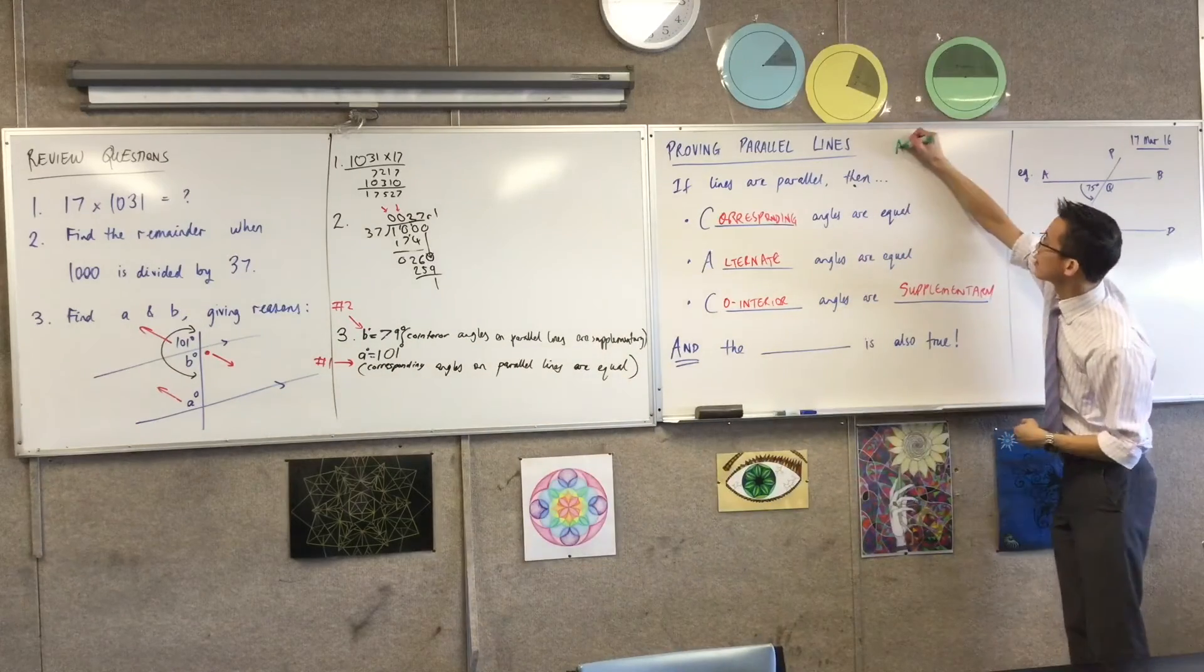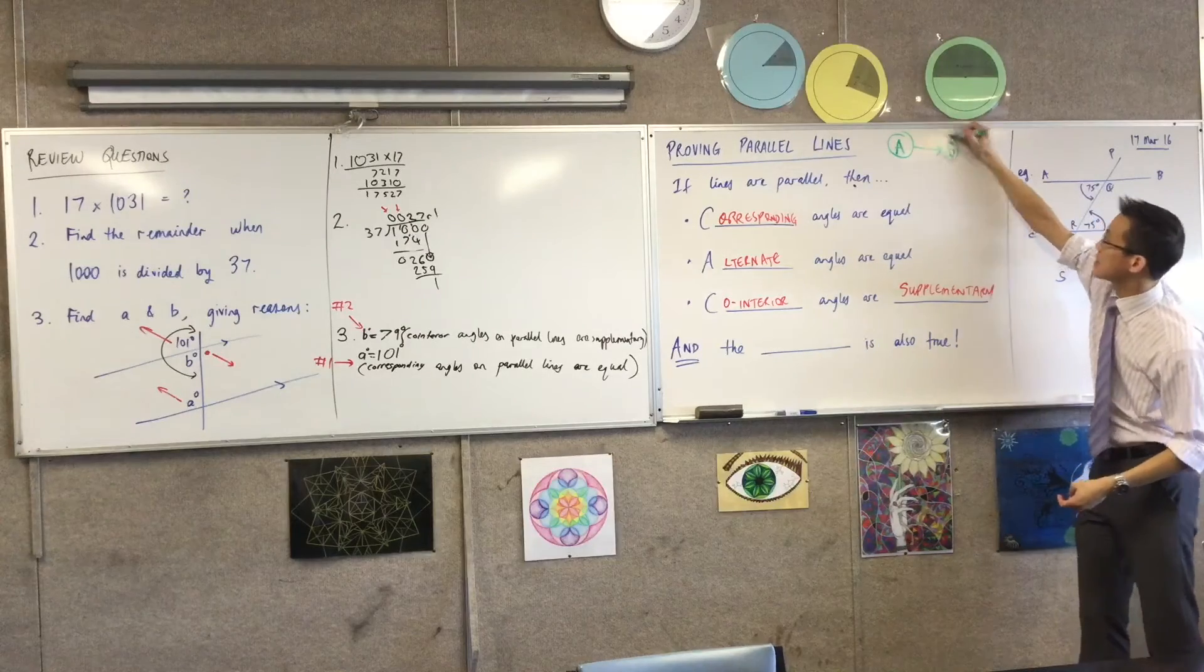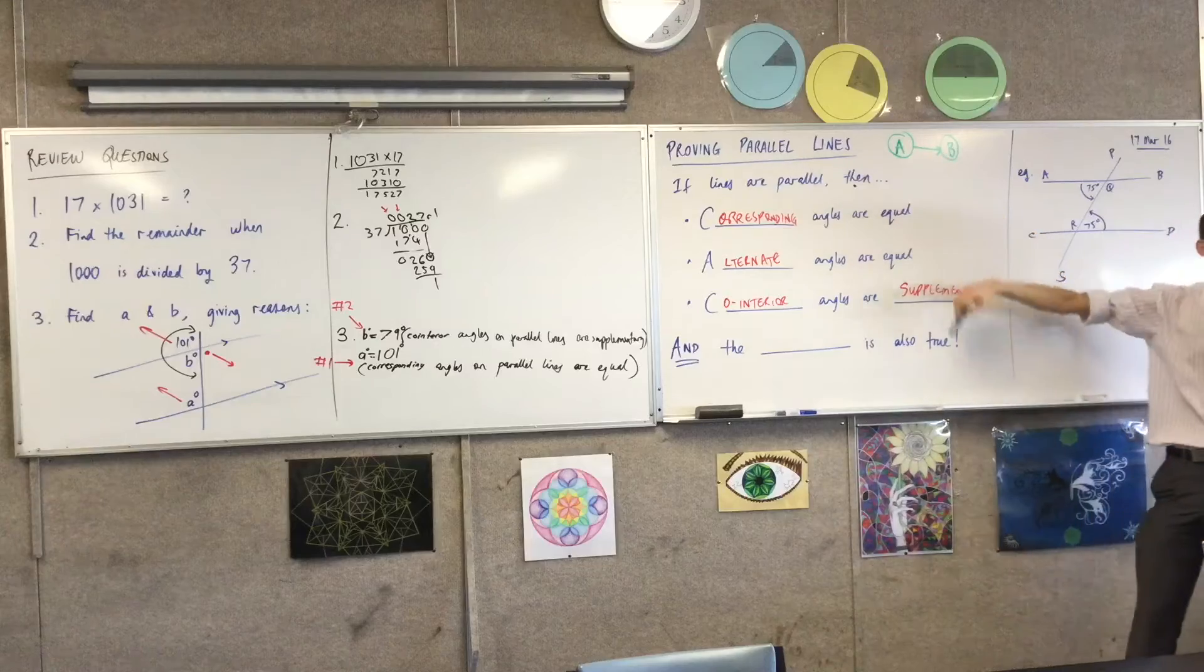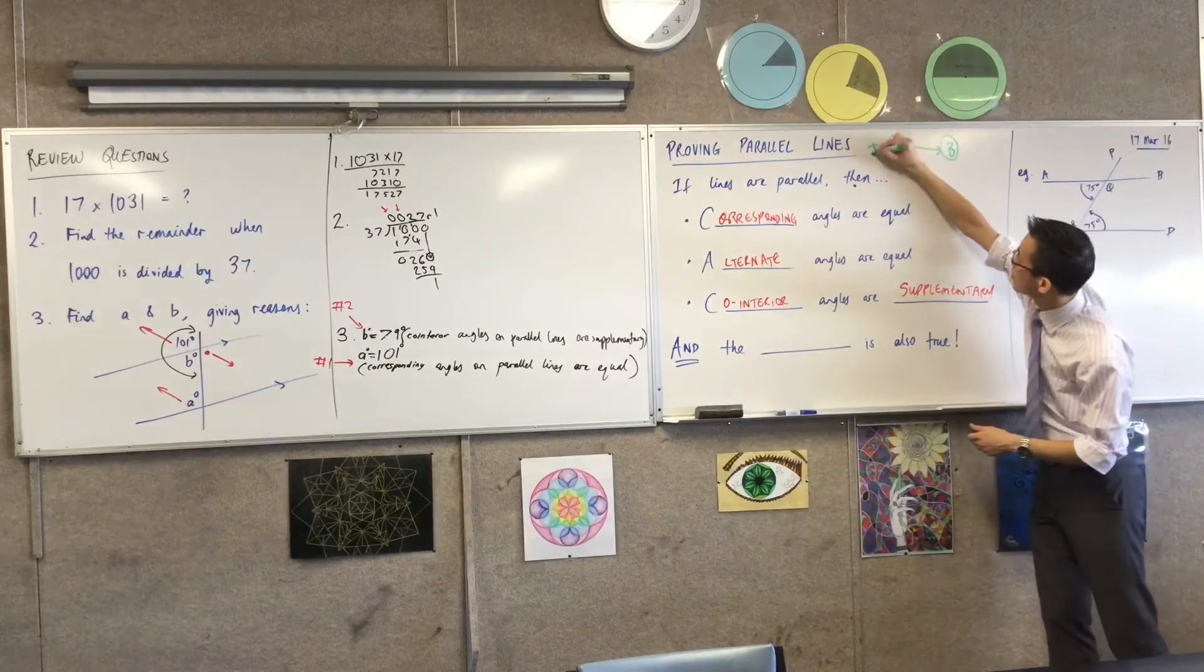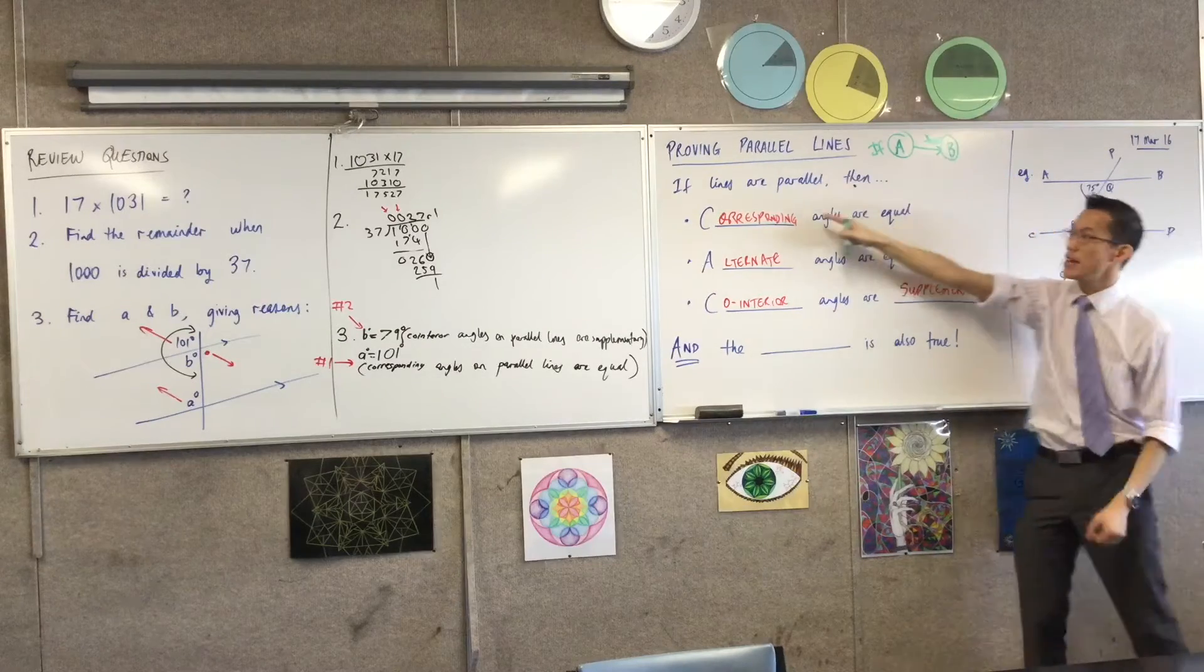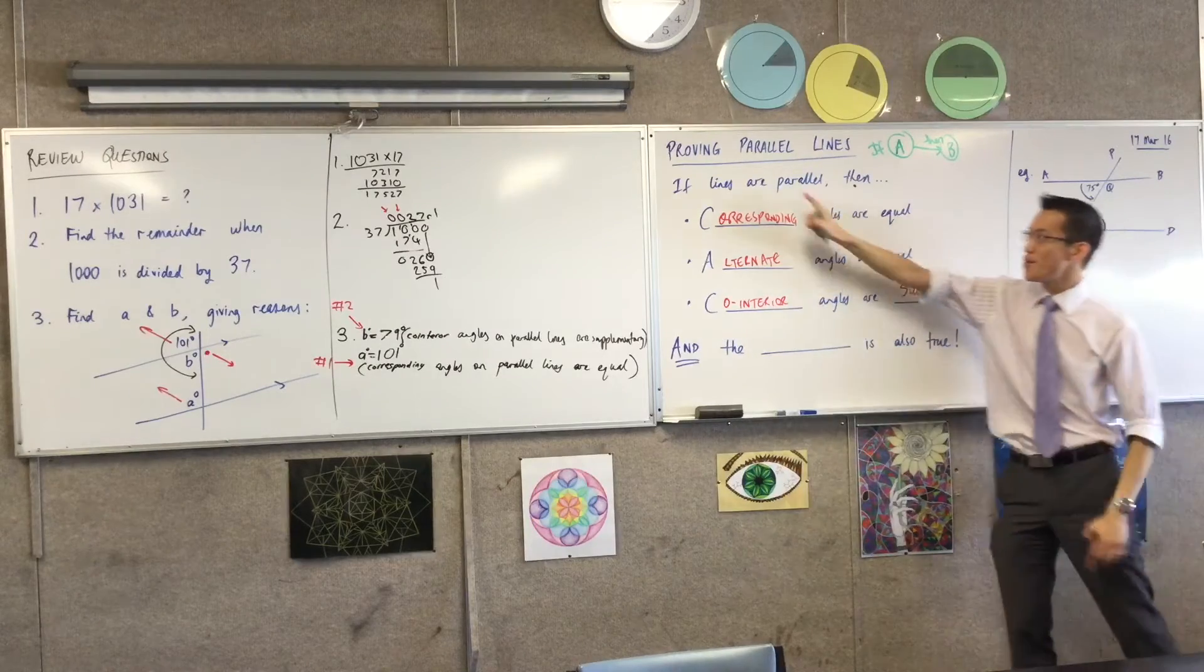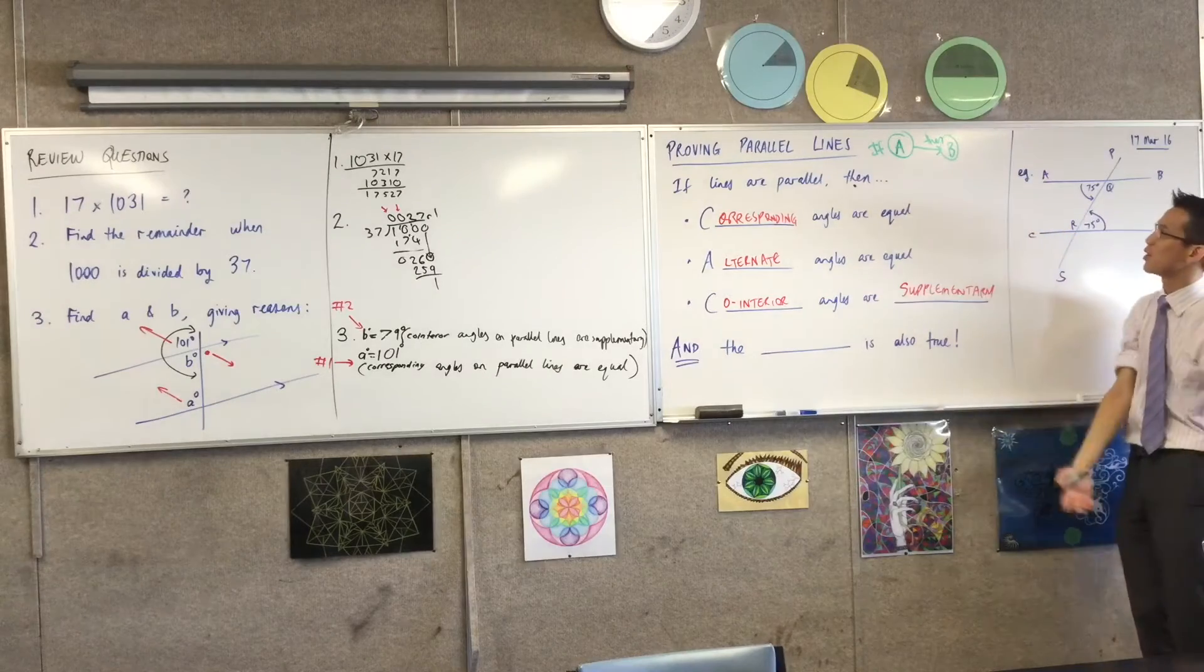If you've got some statement A, and you know that, I can say that some statement B is true. Each one of these is an A and a B. So if lines are parallel, if A is true, then B is true. Corresponding angles equal, or alternate angles equal, or any of these. So you know this, you can deduce or you can conclude this.